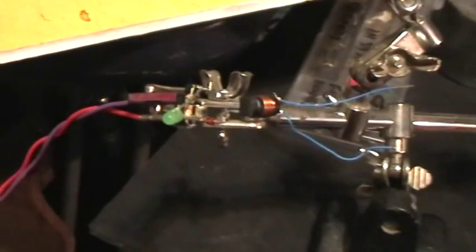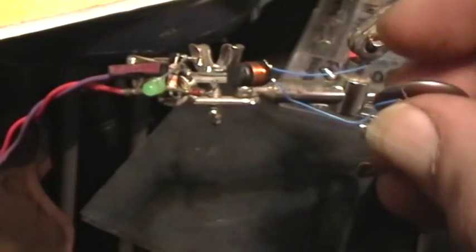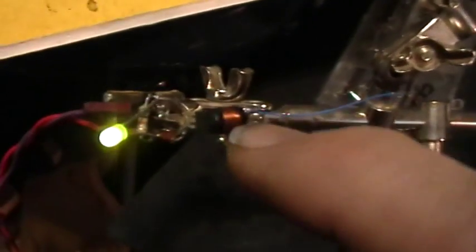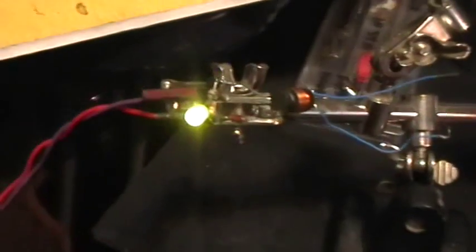Okay, that's the 1881 latching Hall effect sensor with a little electromagnet glued right to it as a switching element. Thank you for watching.